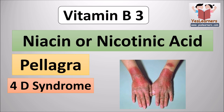The scientific name of vitamin B3 is niacin or nicotinic acid. The disease caused due to the deficiency of vitamin B3 is pellagra. The disease pellagra is also known as 4D syndrome.